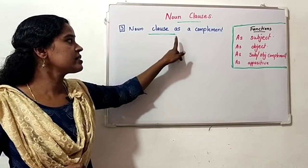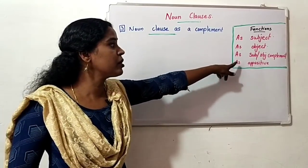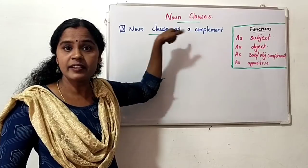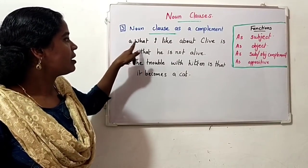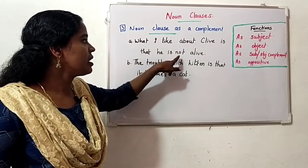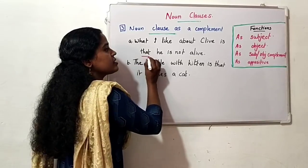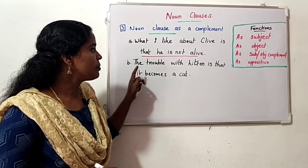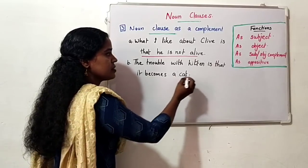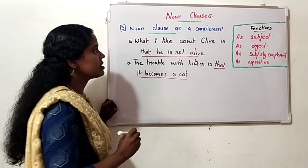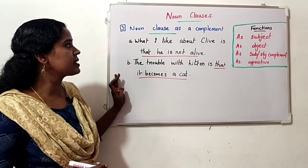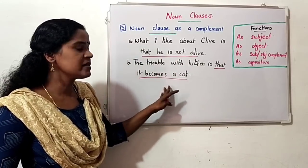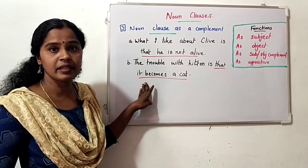Next, noun clause as complement. We have seen that a noun acts as complement for subject and object. Likewise, a noun clause also acts as complement. Examples: 'What I like about Clive is that he is not alive' — 'that he is not alive' is the subject complement. 'The trouble with kitten is that it becomes a cat' — 'that it becomes a cat' is another complement.